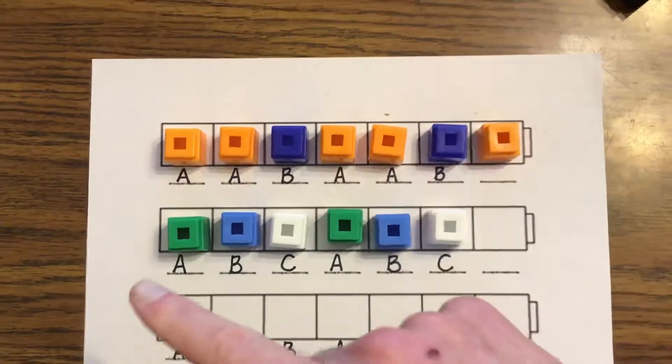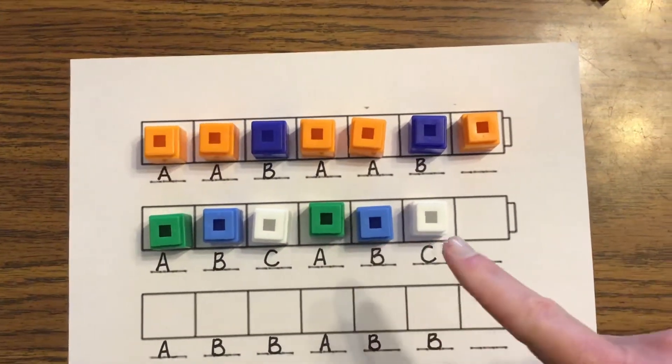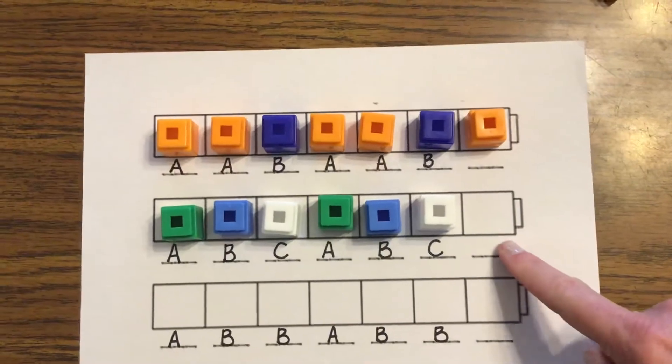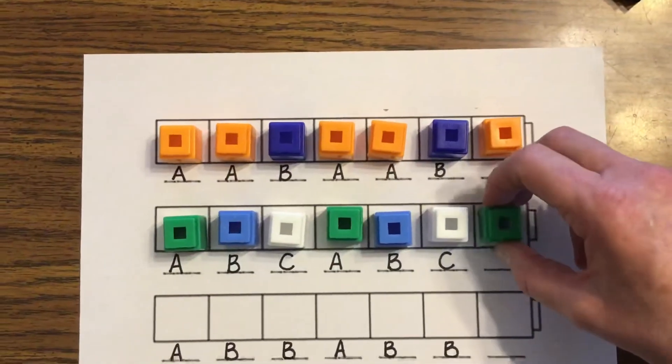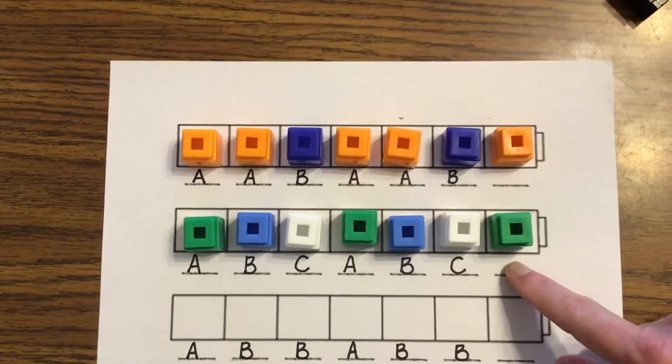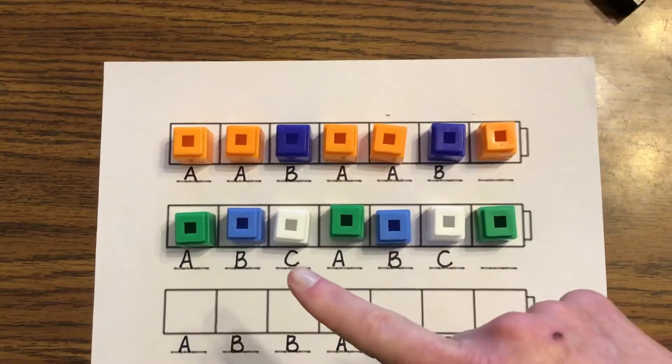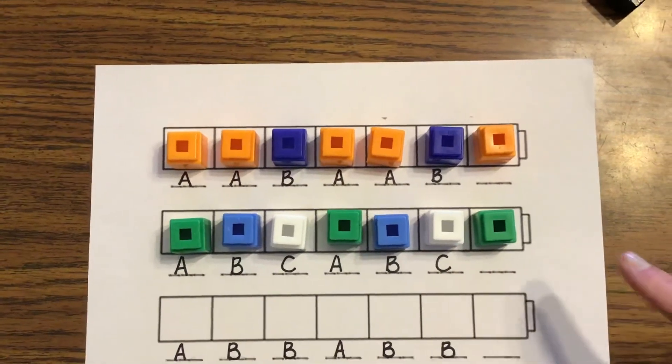Does that fit the pattern? Green, blue, white. Green, blue, white. What comes next? You got it. Green. And what letter is my green in the pattern? A. A, B, C. A, B, C. A, B, C.